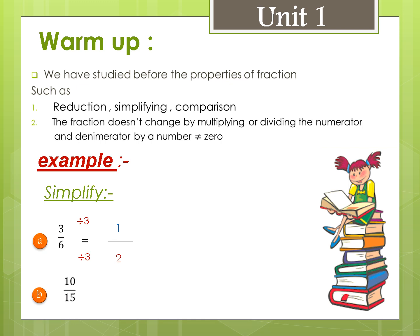Little b: 10 over 15. Since 10 and 15 are both divisible by 5, we divide: 10 divided by 5 equals 2, and 15 divided by 5 equals 3. So 10 over 15 equals 2 over 3.